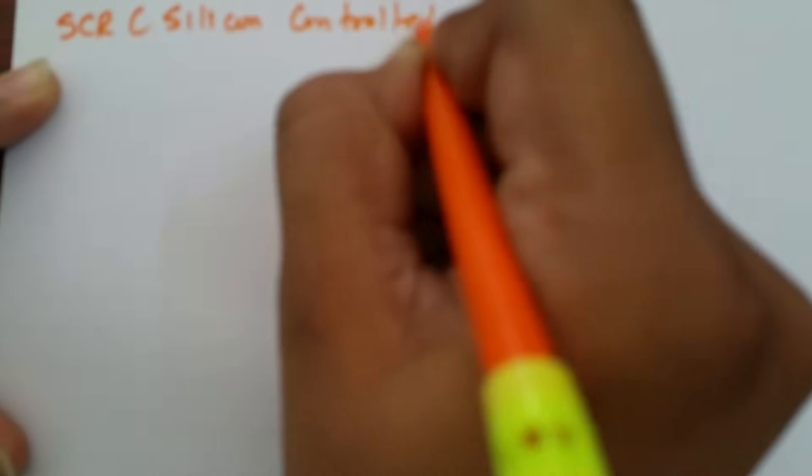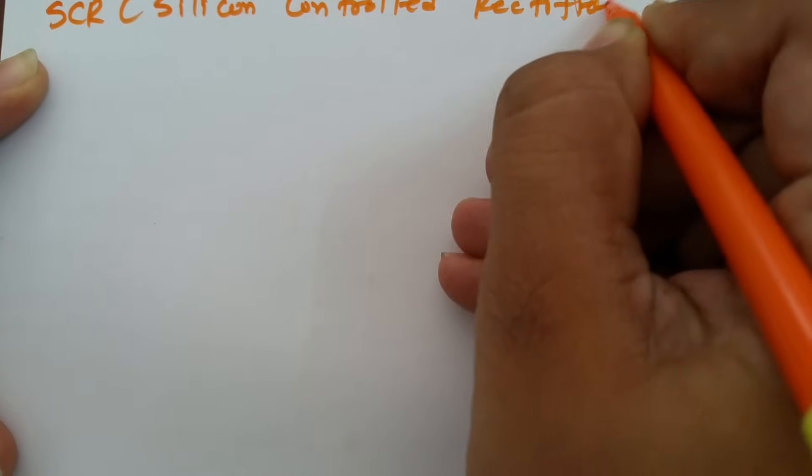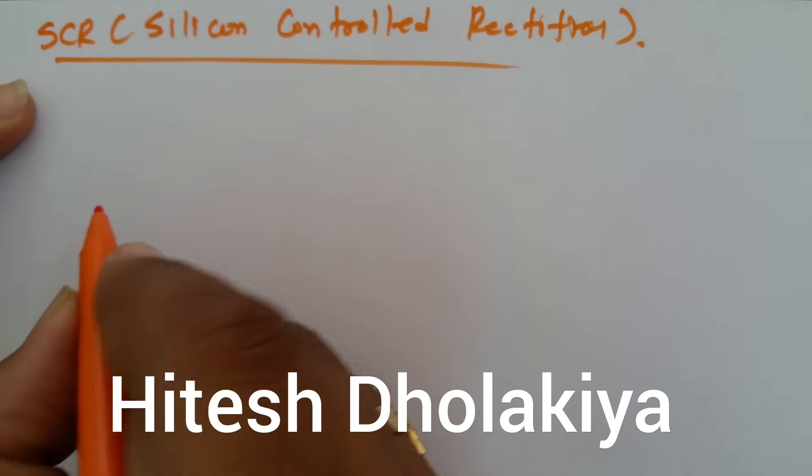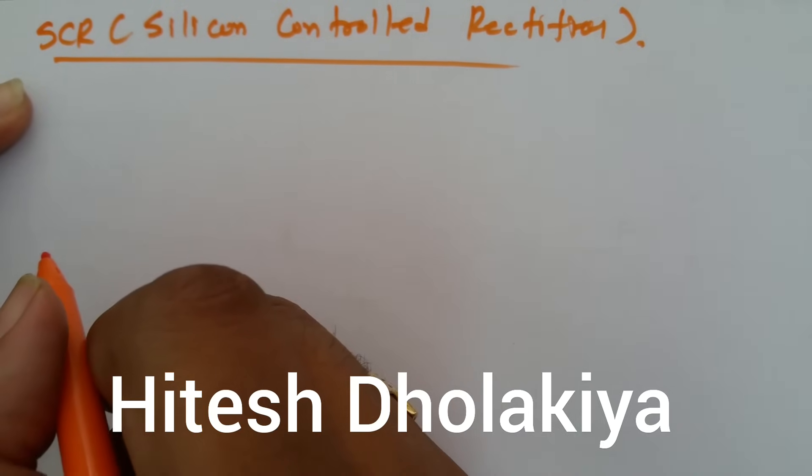In this session I am going to explain Silicon Controlled Rectifier, which is well known as SCR, a very useful device in power electronics. I am going to explain the basic structure of SCR, its characteristic, how it is functioning, and what are the various modes of SCR. SCR is a four-layer, three-junction device and it has three terminals.